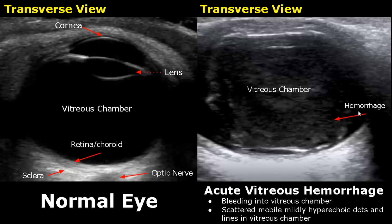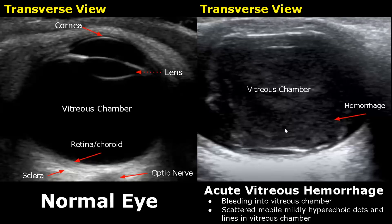Vitreous hemorrhage refers to bleeding into the vitreous chamber. In the acute phase, we will see scattered, mobile, mildly hyperechoic dots and lines in the vitreous chamber. This appears because of the presence of blood, which is denser than vitreous gel.